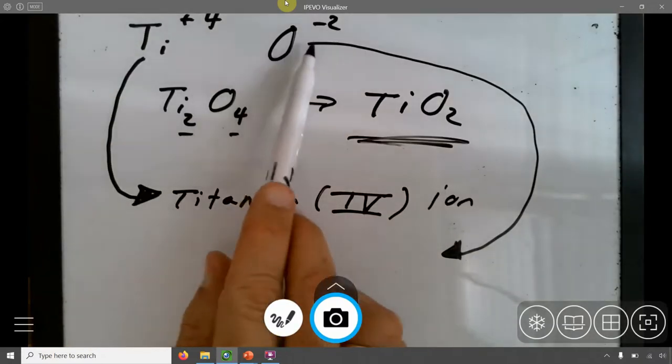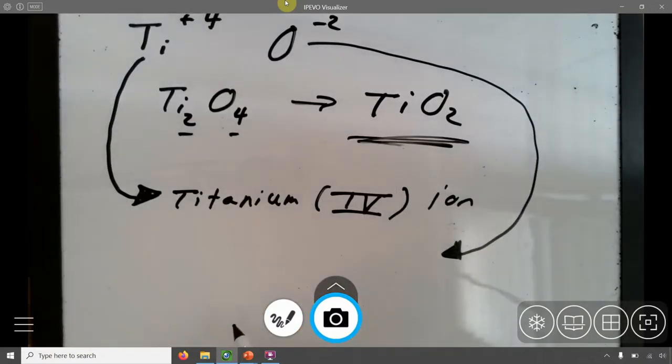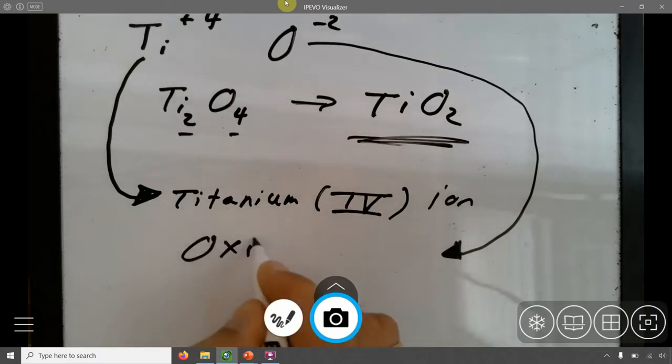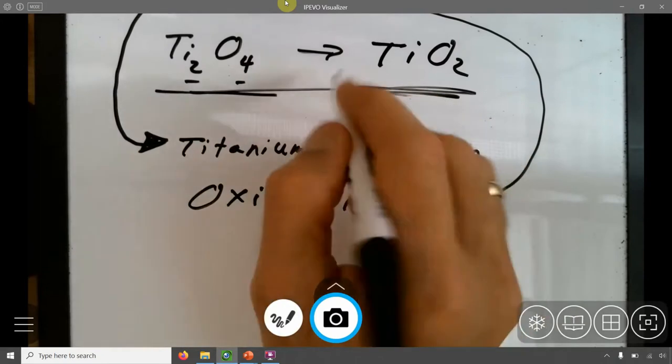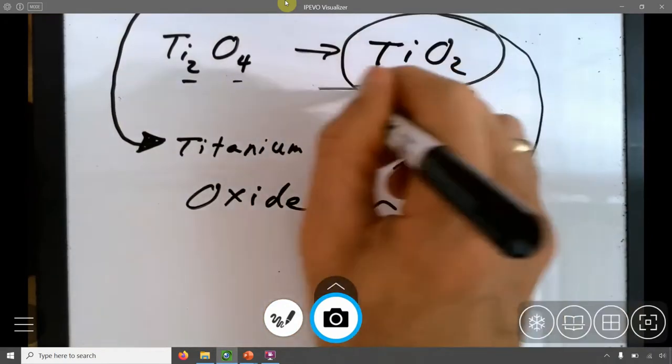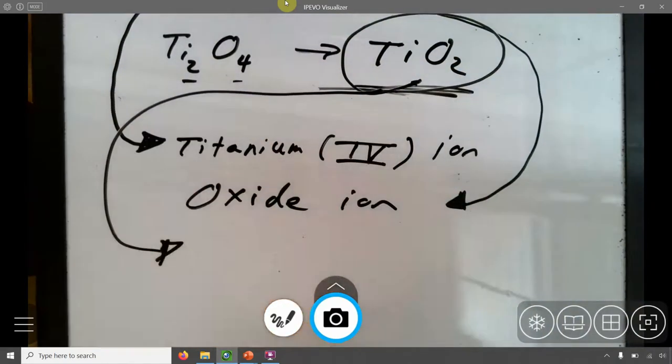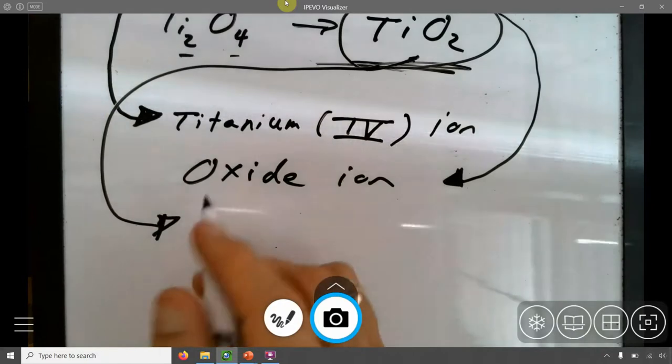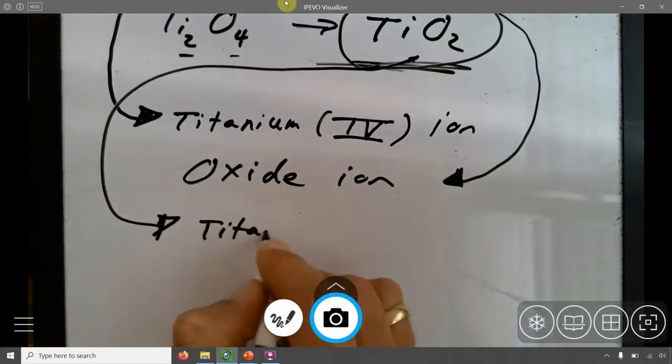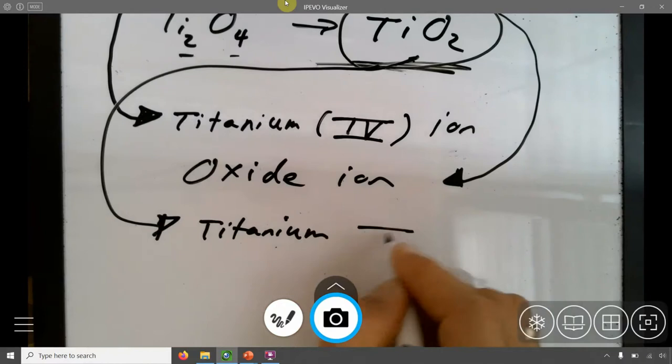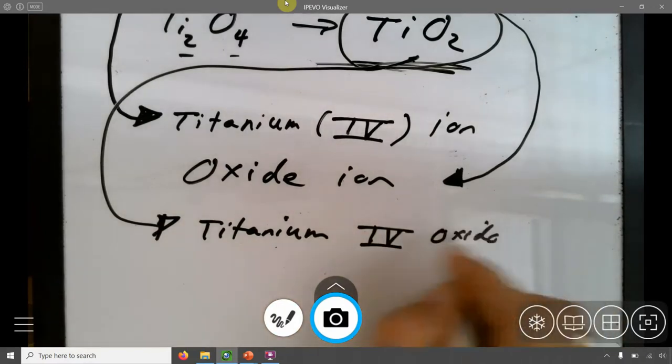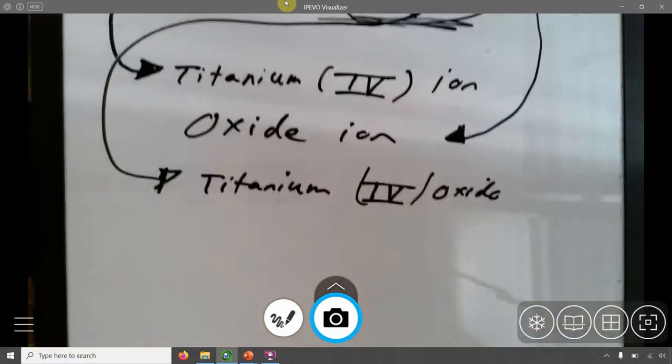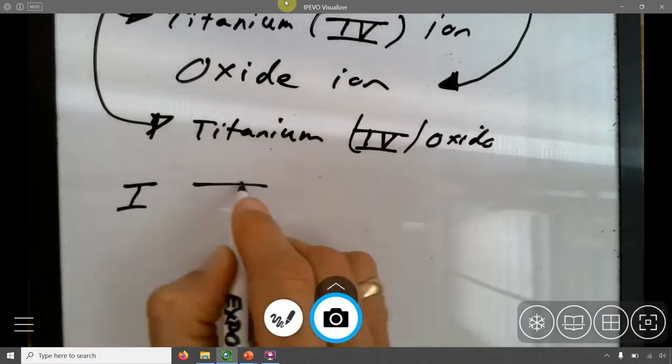This oxygen is a negative ion. So negative ions get the ide thing at the end. So oxygen becomes oxide. And then to name this TiO2, to name this thing, you smoosh both of these together and drop the word ions. So it's titanium four oxide. So that's it.